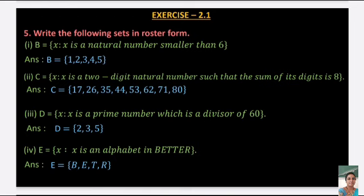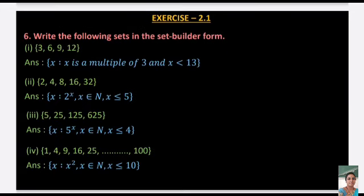Next: D = {x : x is a prime number which is a divisor of 60}. The prime divisors of 60 are 2, 3, and 5, so D = {2, 3, 5}. Next: write the set of letters in the word BETTER — the distinct letters are B, E, T, R.